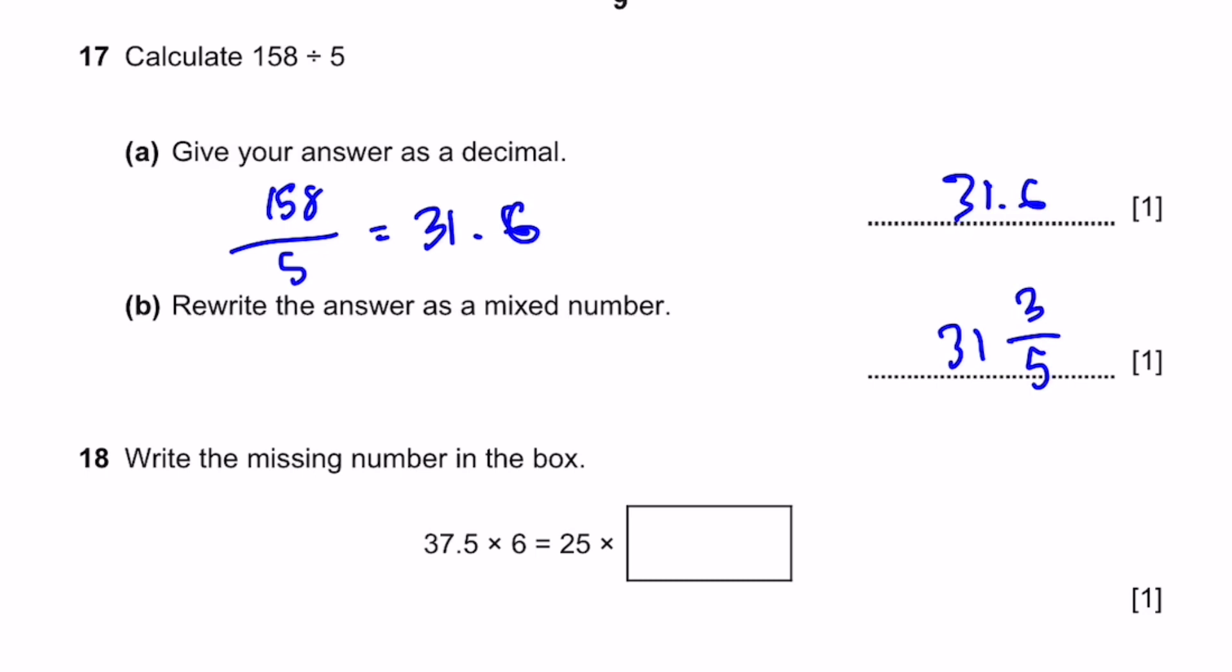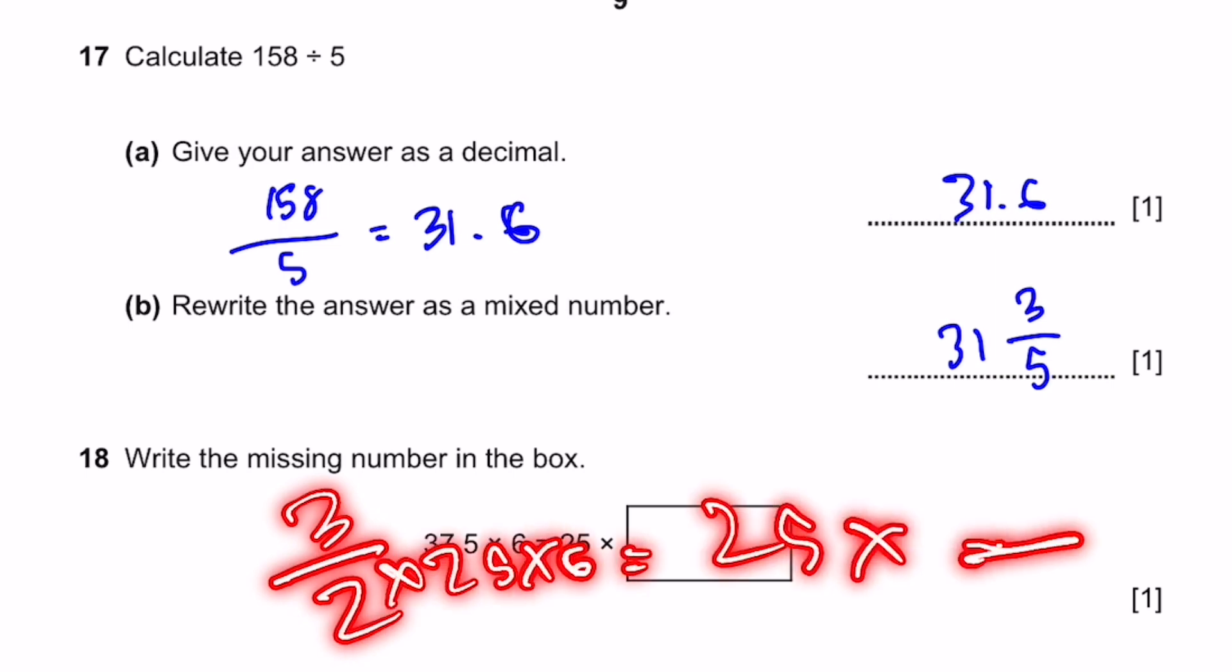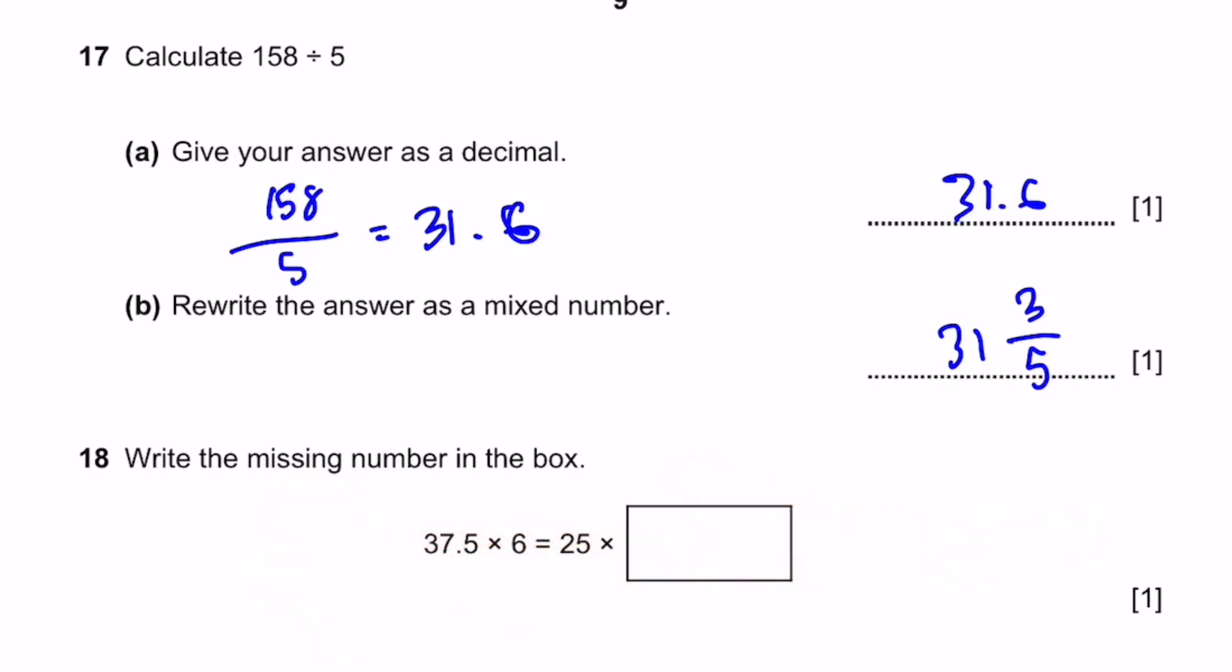Question 18. Write the missing number in the box. 37.5 times 6 equals 25 times blank. 37.5 is 3 by 2 multiplied by 25. So when we do this, that means 3 by 2 times 25 times 6 equals 25 times blank. Cancel the 25s. 3 by 2 times 6, which is 9.